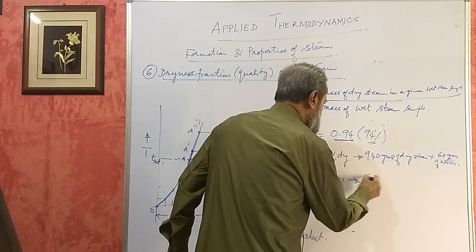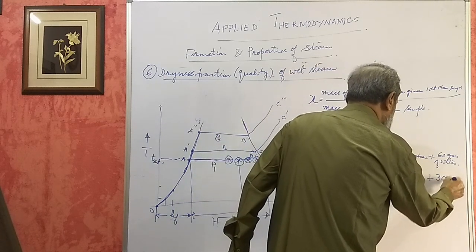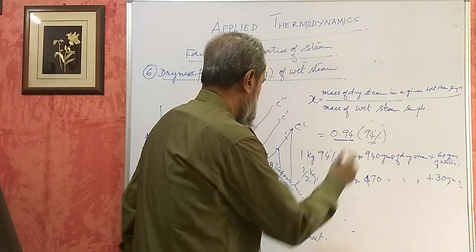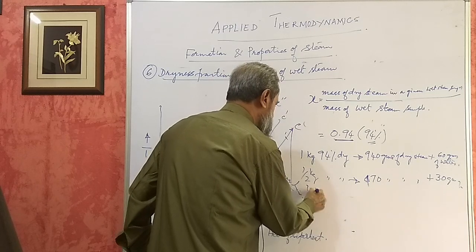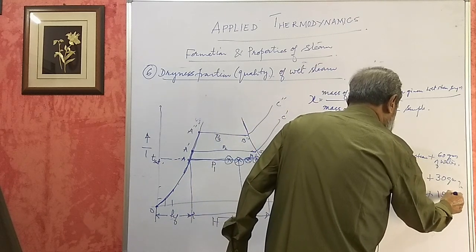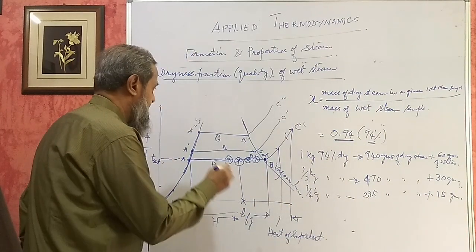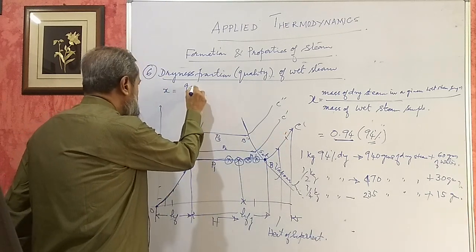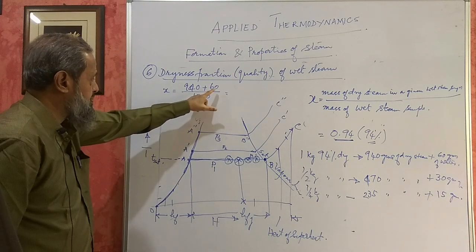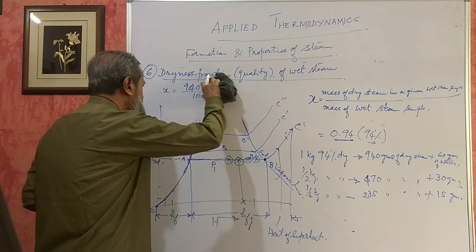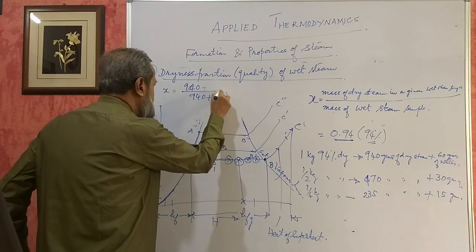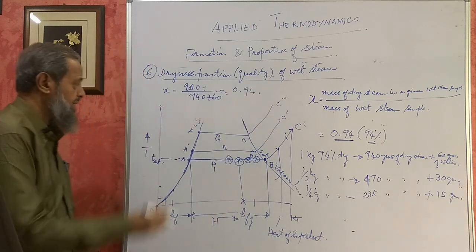If you take a half kg sample of 94% dry steam, it has 470 grams of dry steam and 30 grams of water. If you take a quarter kg of this, it has 235 grams of dry steam in it and remaining 15 grams is water or moisture. Mathematically, dryness fraction will be 940 divided by 940 plus 60, that is 1000 grams, which gives you 0.94. If you multiply it by 100, it becomes 94%.